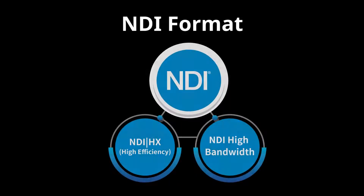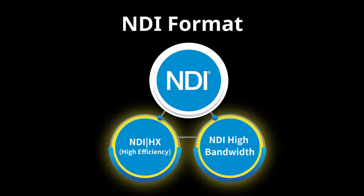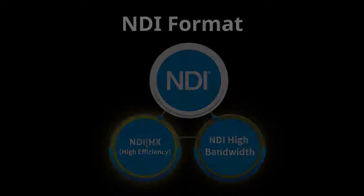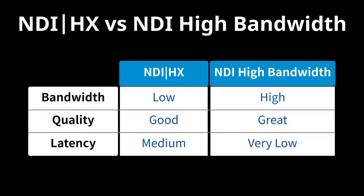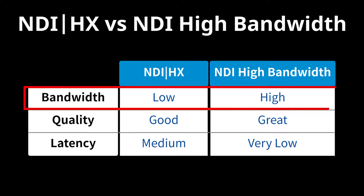NDI is available in two main formats: NDI-HX and NDI high-bandwidth. Data rates are very high for NDI high-bandwidth. NDI high-bandwidth is best suited to users with a dedicated high-speed AV network and who need the very highest quality with very low latency.